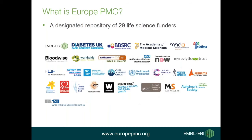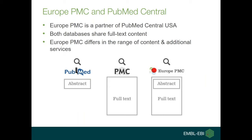EuropeMC is a designated repository of 29 life science funders — you can see all of them with their logos in this slide. This means that all researchers funded by one of those funders will submit their manuscript into EuropeMC directly, and this will be visible as a full text article freely accessible on the EuropeMC platform. EuropeMC is also a partner of PubMed Central USA, sharing the full text corpus of 5.7 million articles and the abstracts coming from PubMed.